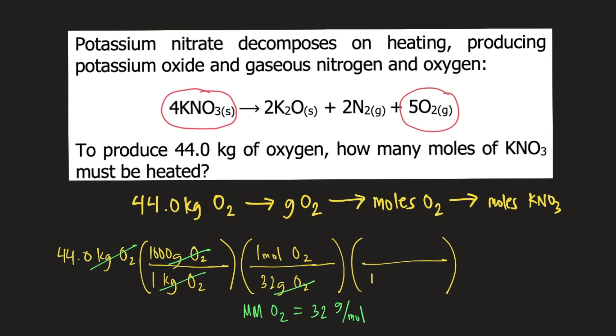We put 5 moles of O2 at the bottom and 4 moles of KNO3 on top so that the moles of O2 will cancel, and our final unit would be moles of KNO3.